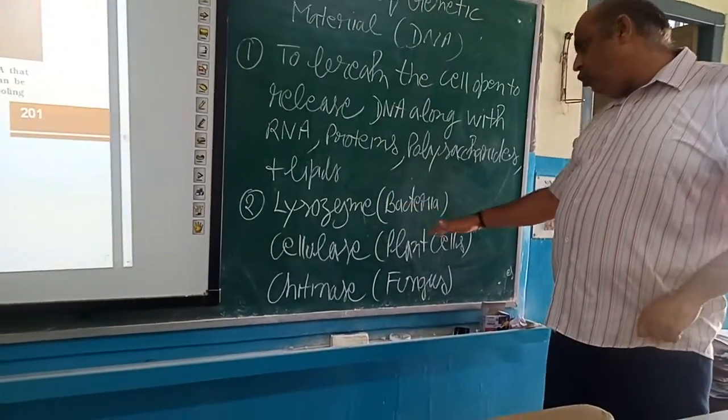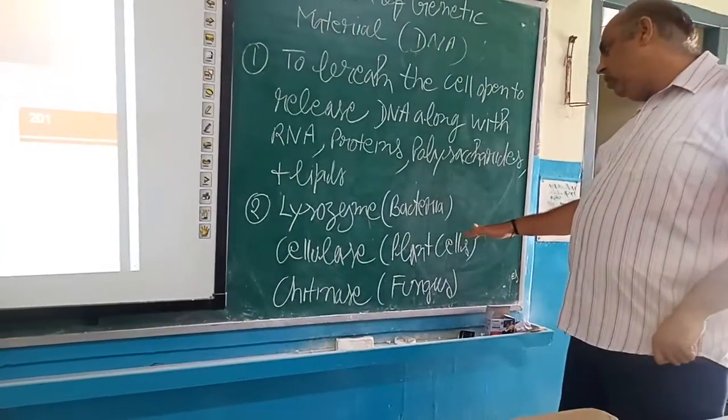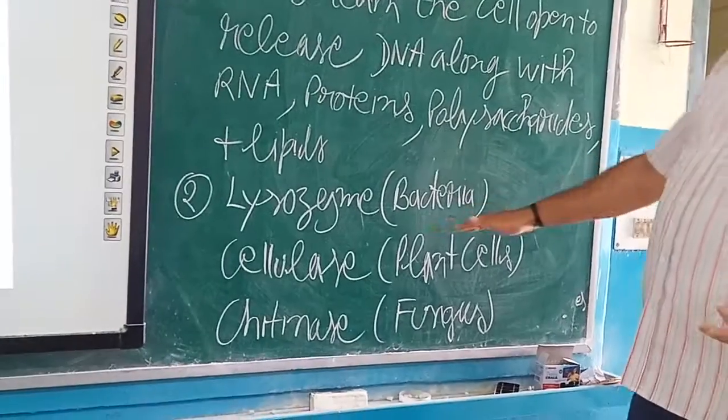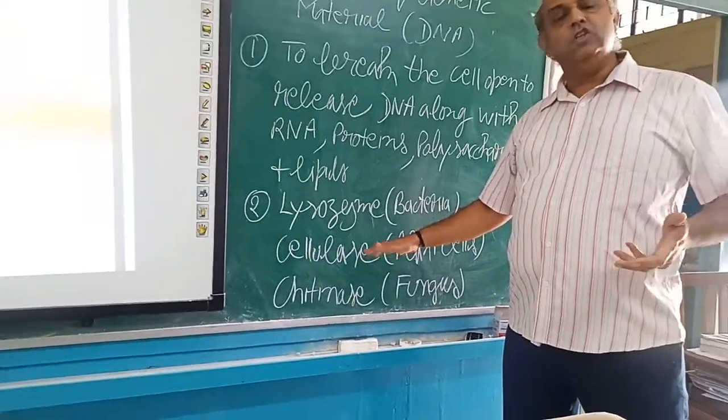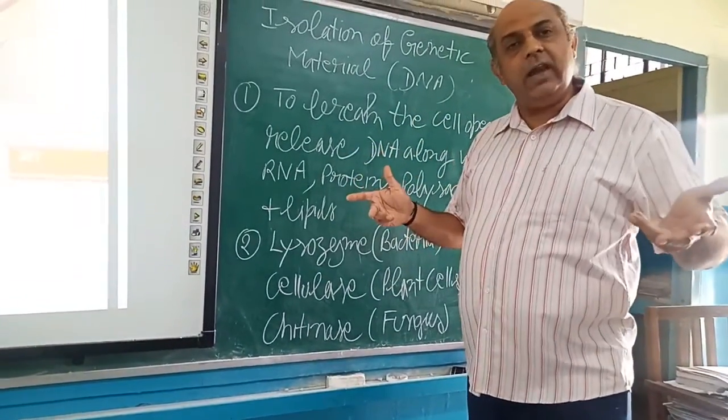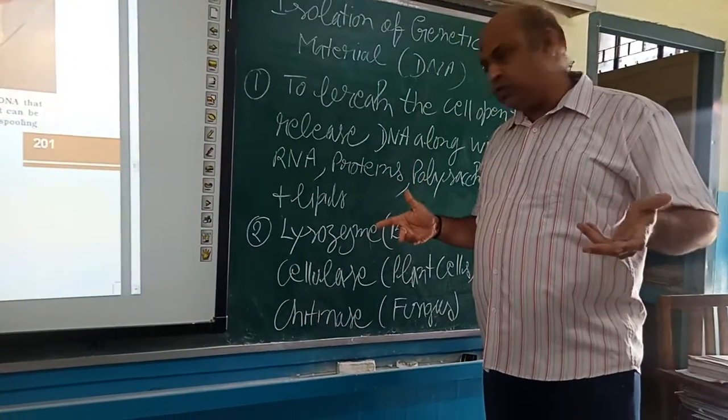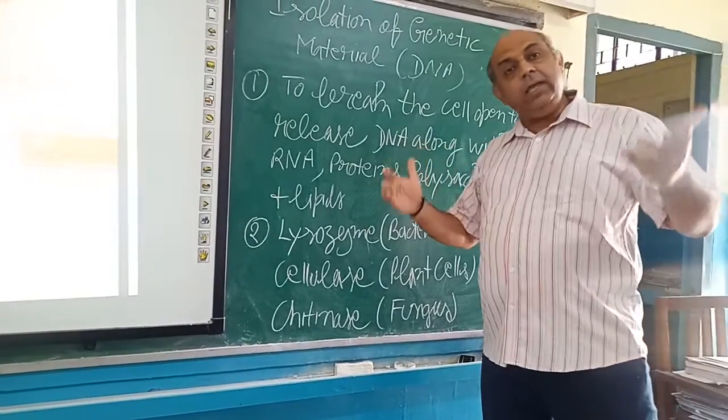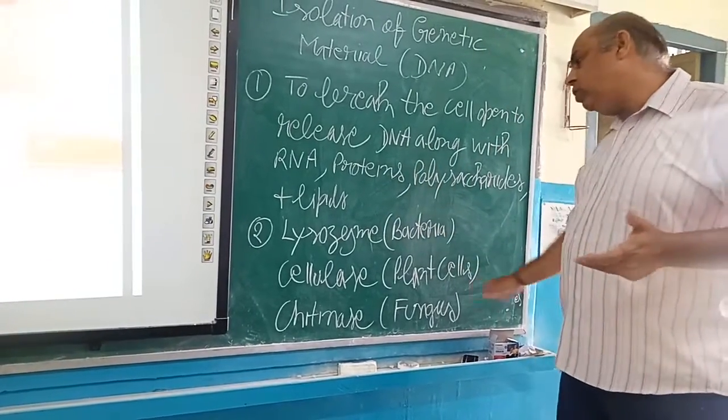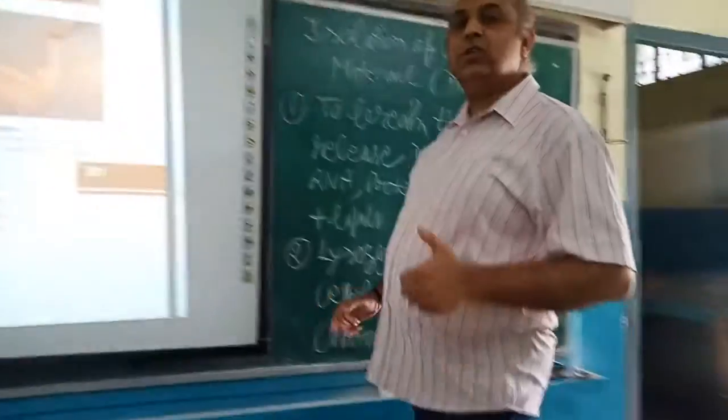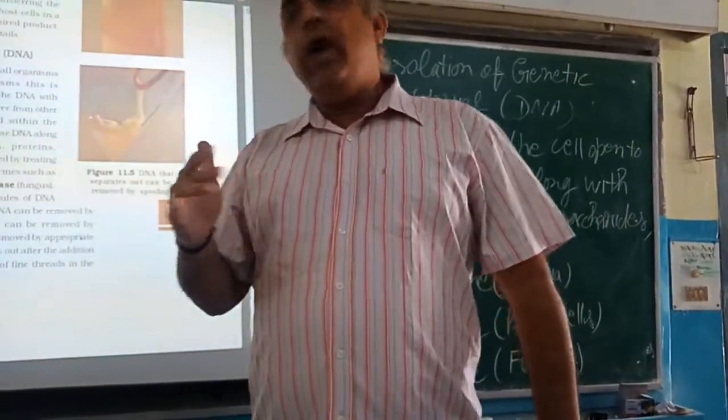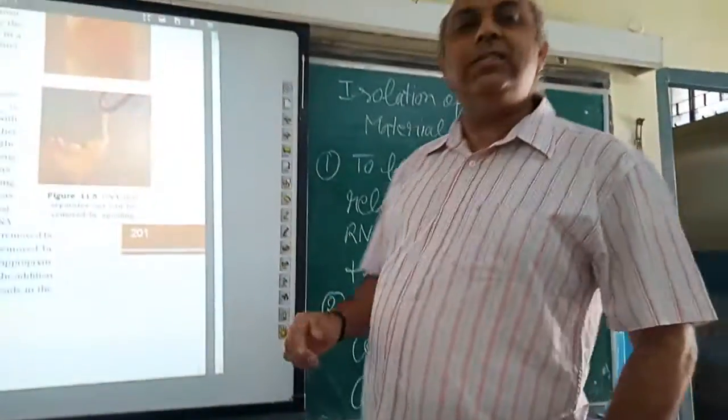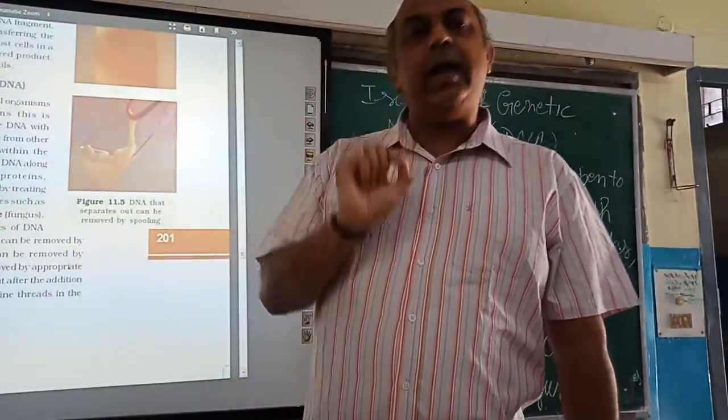If we have to isolate DNA from a plant material, plant cell, then we put cellulase enzyme, so that we can break up the cell wall, which is made up of cellulose. And if we are going to isolate DNA from fungi, then we have to add chitinase enzyme. Students, can you tell why in case of fungus we use chitinase enzyme? Because the cell wall of the fungus is made up of chitin.